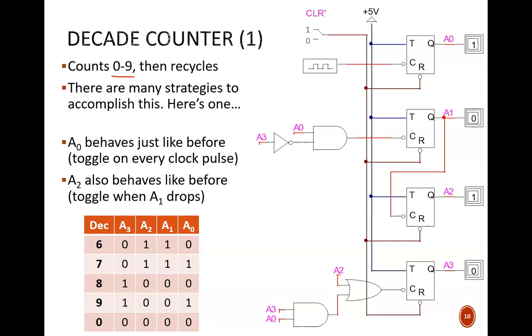There are many strategies to accomplish this count. One is shown here, using T flip-flops and a few logic gates. The basic structure is similar to what we saw with the binary counter. Each flip-flop is always in toggle mode, due to this high signal on the T inputs. And the count is managed by controlling when a negative pulse is sent to each of the clock ports.